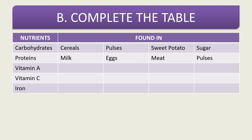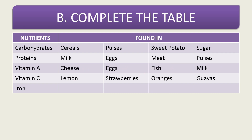Proteins are found in milk, eggs, meat, and pulses. Vitamin A is found in cheese, eggs, fish, and milk. Vitamin C is found in lemon, strawberries, oranges, and guavas. Iron is found in meat, nuts, beans, and liver. These are the different food materials in which you find different nutrients.